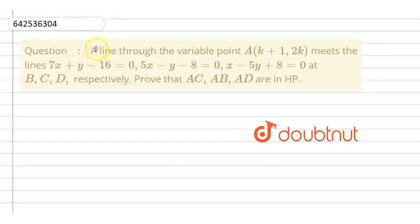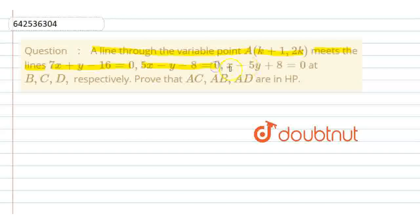Hello everyone. The question is: a line through a variable point A, which is (k+1, 2k), meets three lines — first is 7x + y - 60 = 0, second is 5x - y - 8 = 0, and the third one is x - 5y + 8 = 0 — at B, C, and D respectively. We need to prove that AC, AB, and AD are in harmonic progression.